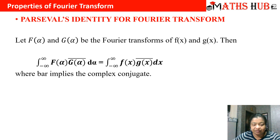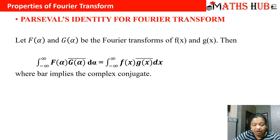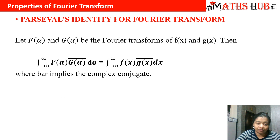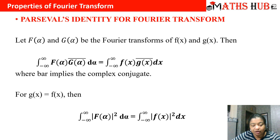In Parseval's identity, whenever we have two functions f(x) and g(x) with Fourier transforms f(α) and g(α), then the identity states that the integral from minus infinity to infinity of f(α) times the conjugate of g(α) dα equals the integral from minus infinity to infinity of f(x) times the conjugate of g(x) dx. When both functions are the same, the formula reduces to the integral of |f(α)|² dα equals the integral of |f(x)|² dx.